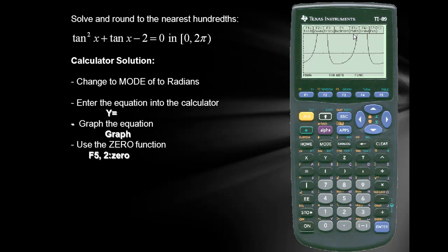We'll simply press F5. We'll use the second choice which is the zero function. I'll press enter. We'll find the first zero. And we'll ask for a lower bound or a left bound. So I'll simply move my cursor to the left of my zero. I'll set that in with enter.